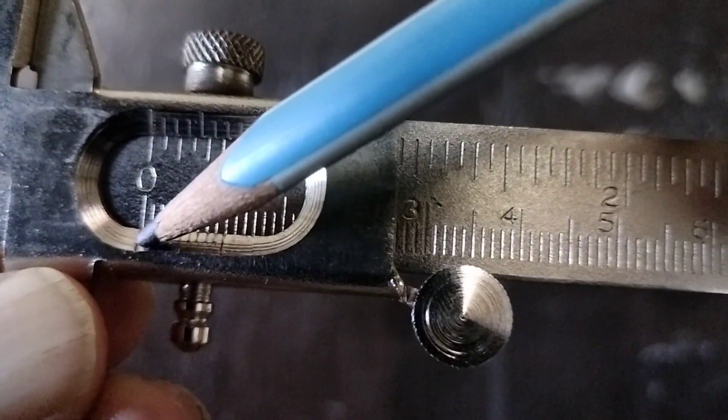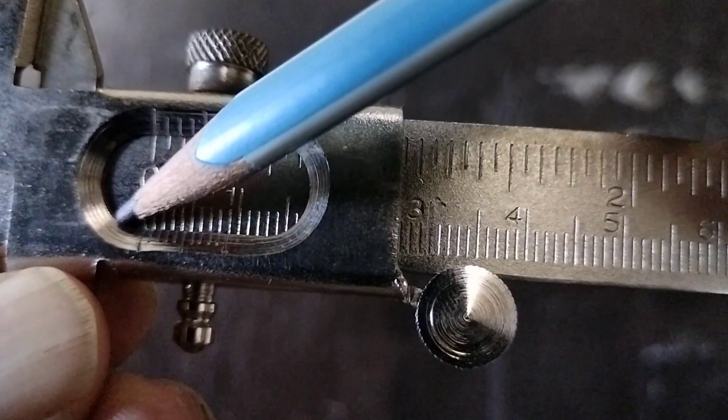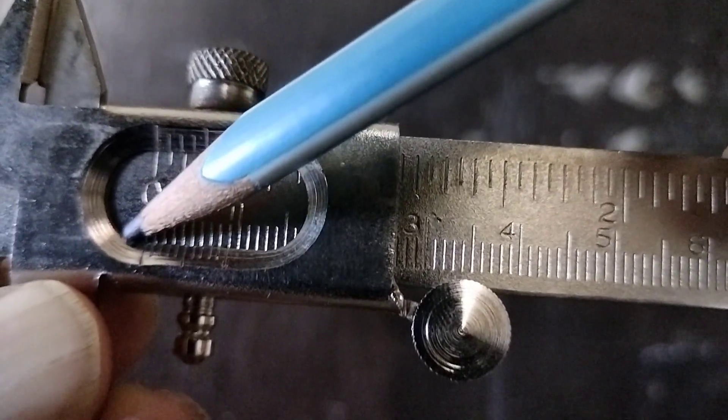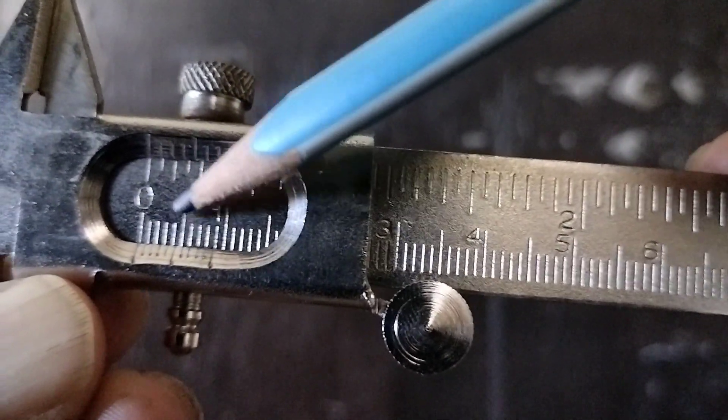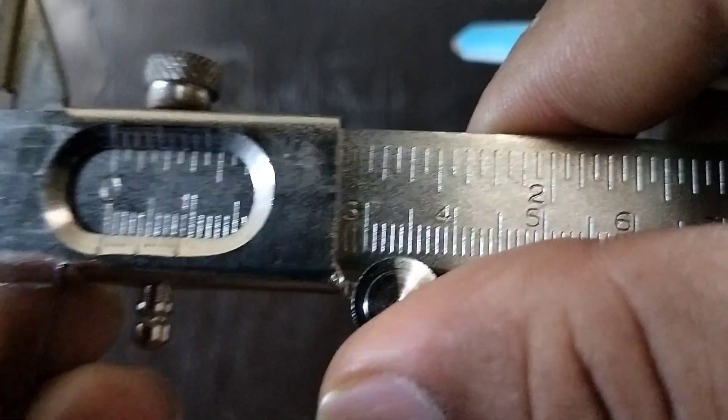If this zero, the Vernier zero, is on the left side, then we can say negative error. And if this zero is on the positive side of the main scale, then we can say that is positive zero error.